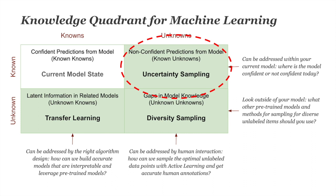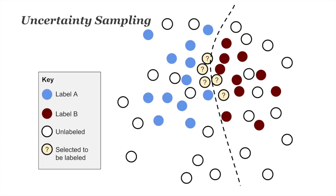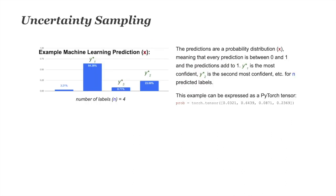We'll begin with uncertainty sampling — sampling items when your model is confused, because those closest to the decision boundary are most likely to be predicted incorrectly and most likely to move that boundary if currently incorrect. Here's an example of a simple binary task with label A and label B: uncertainty sampling should ideally target the five items with question marks in the middle — these are the five closest to the decision boundary. For our working example, let's assume a four-class prediction task.